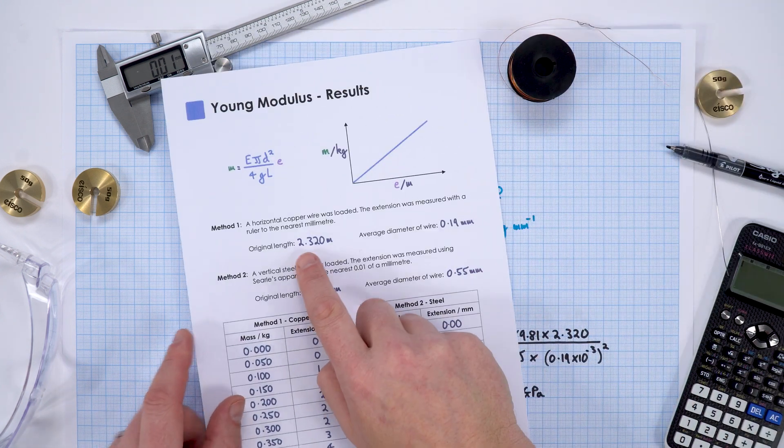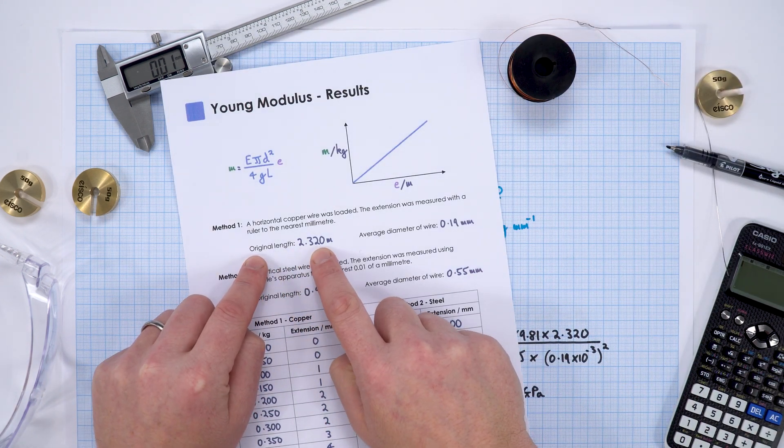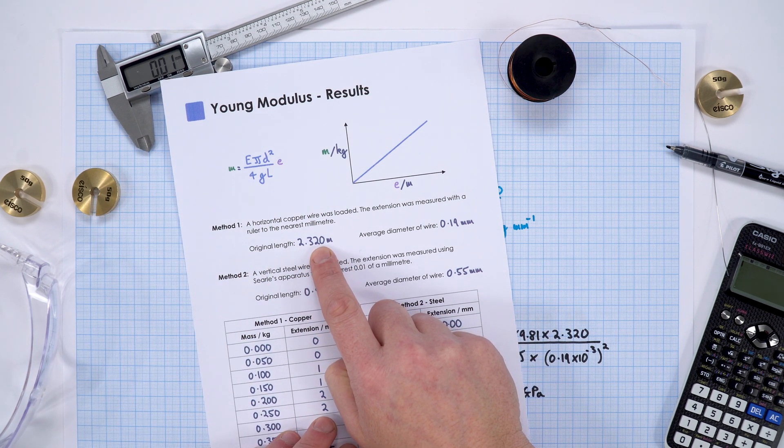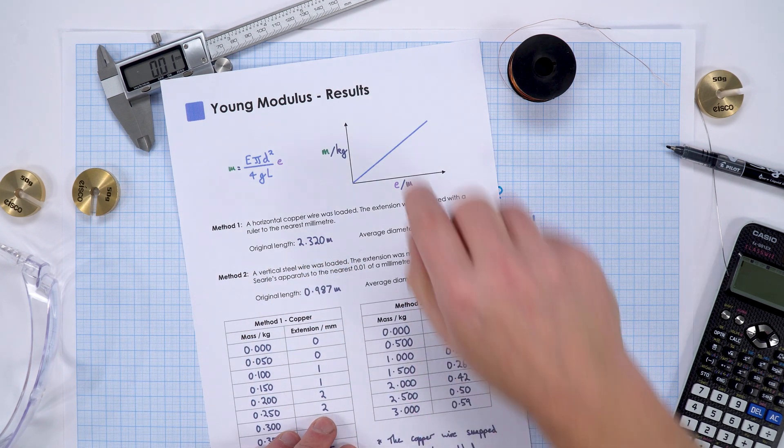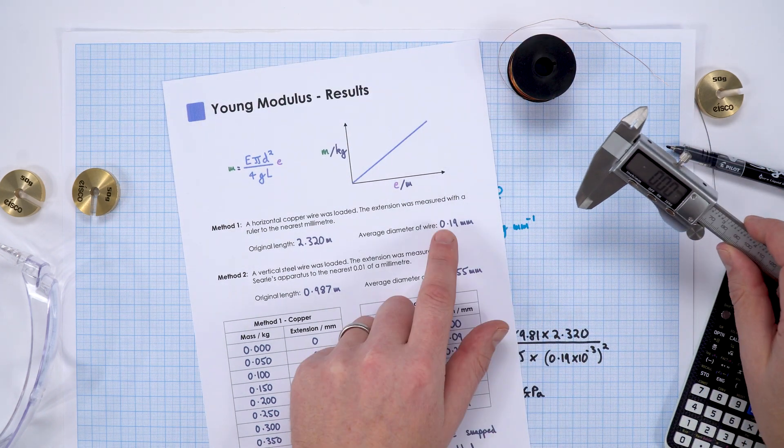Here are my results when I used the copper. I had the longest piece of wire I could fit onto my desk, which was 2.320 meters long. The average diameter that I measured was 0.19 of a millimeter.